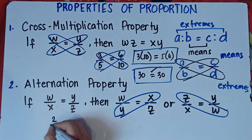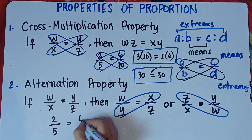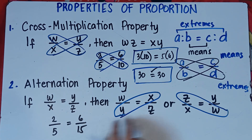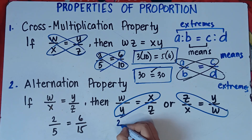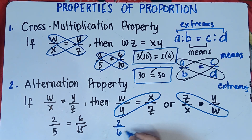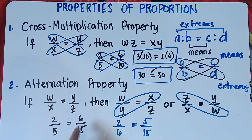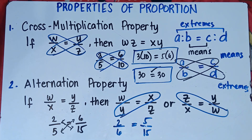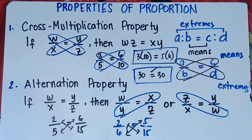For example, if we have 2 over 5 equals 6 over 15, we can interchange the means 5 and 6. So we can write 2 over 6 equals 5 over 15 — simply copy 2 and 15, then interchange 6 and 5. Checking with cross multiplication: 2 times 15 is 30, and 5 times 6 is 30. So 30 equals 30. You can also interchange the extremes.